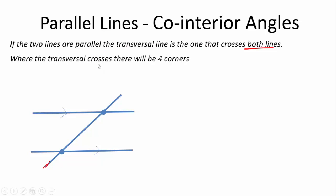When a transversal line crosses, or where a transversal line crosses, there will be four corners. Right, so we're going to call those corners A, B, C, and D.